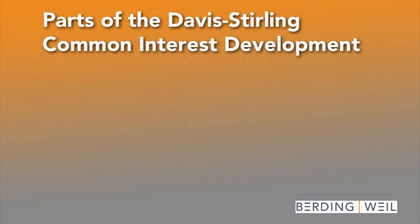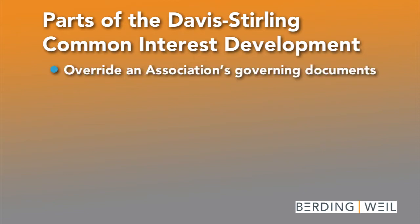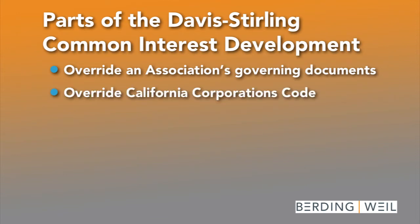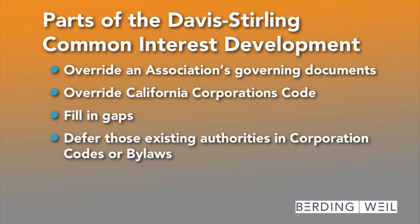One of the really vexing parts of this law is that some parts of it override an association's governing documents, some parts of it override the California Corporation's code, some parts only fill in gaps, and some parts defer to those existing authorities, whether in the corp code or maybe it's in the bylaws.